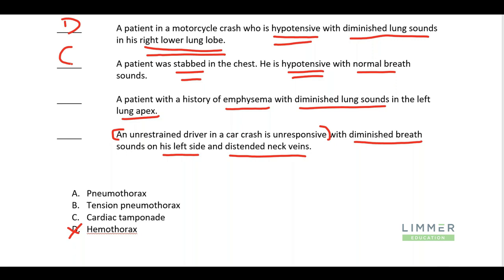Now I've got two more. The patient with emphysema has diminished lung sounds in the left lung apex. The unrestrained driver is unresponsive with diminished breath sounds and distended neck veins. What's going to cause distended neck veins? That unresponsiveness — that's a really, really sick patient. That's going to be the tension pneumothorax. And our emphysema patient probably ruptured a bleb; diminished sounds only in the apex is usually where pneumothorax shows. So we have: hemothorax, tamponade, pneumothorax, tension pneumothorax.